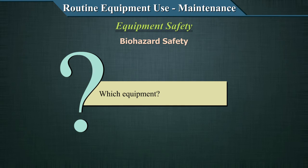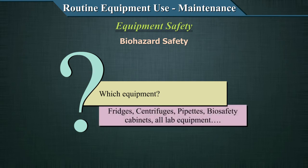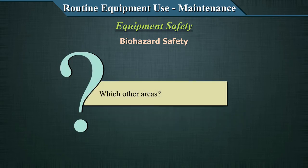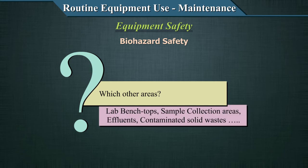Every piece of equipment requires decontamination — fridges, centrifuges, pipettes, biosafety cabinets, and all laboratory equipment. Apart from equipment, decontamination also involves lab benchtops, sample collection areas, effluents, and contaminated solid waste. Decontamination practices should be part of your overall laboratory safety protocol, not just for equipment but also for all other areas.